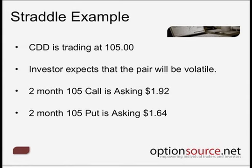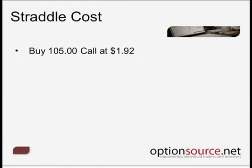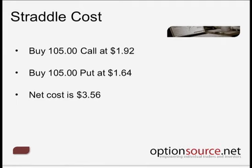You'll never find yourself in a scenario whereby the call and the put options, both of the same strike and expiration month, are going to be trading the same because of the other factors influencing the price of the option contract. Recognizing this example as a Monday, these were the prices of those particular option contracts. So what we could do, essentially, is buy a 105 call at $1.92, then go in and buy a 105 put option at $1.64. The net cost of that position is $3.56.